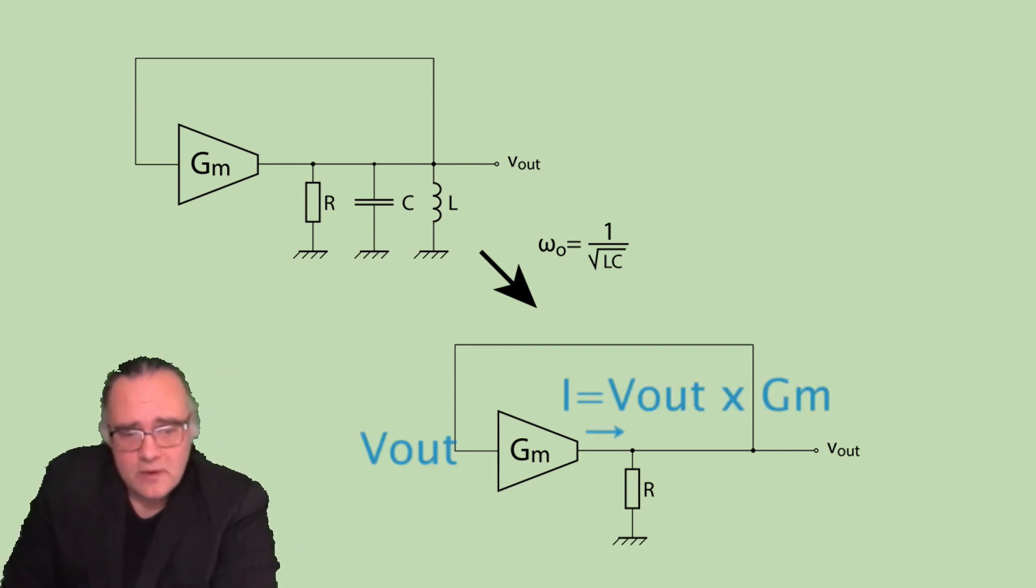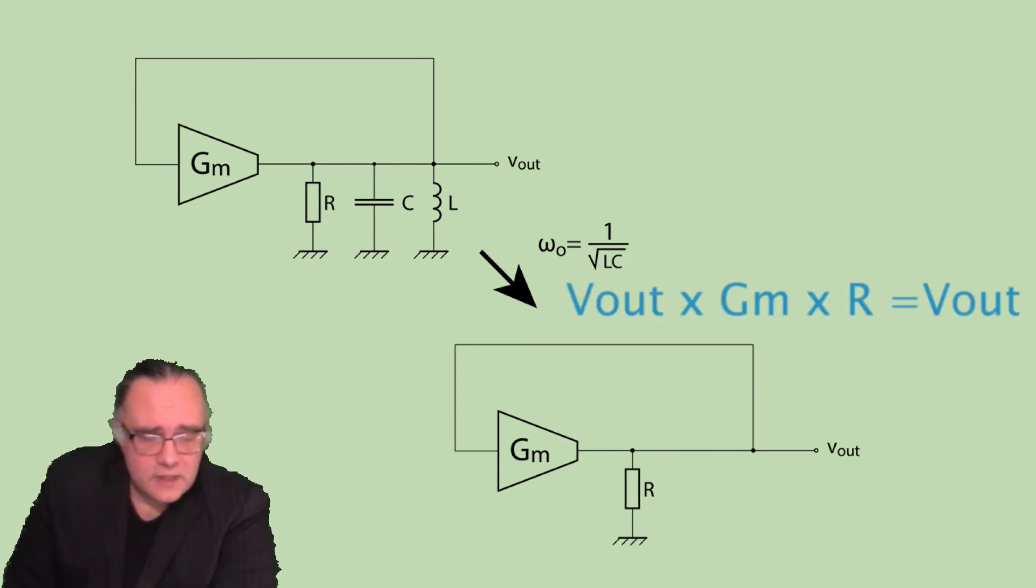So now we get for Vout at the output of the transconductance stage that it will be Vout times GM which is the current times R. If GM is chosen to be 1 over R exactly, R will cancel and Vout is equal to Vout.